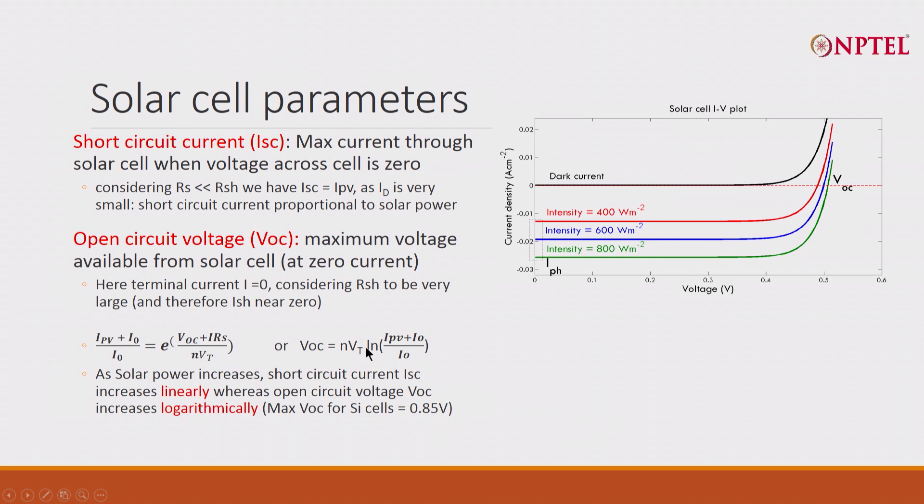And as long as I is zero, this IRS term is not there. And the VT term, you can take to the other side. So, nVT into natural log of (IPV+I0)/I0. This is the important equation that you must remember. This is the open circuit voltage.